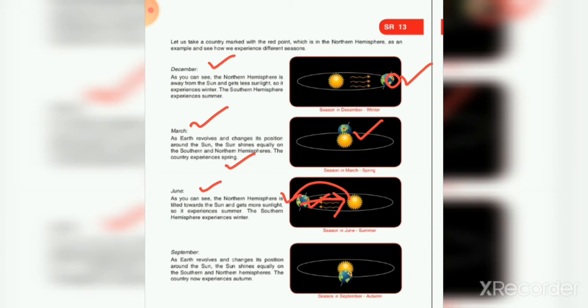In September, as Earth revolves and changes its position around the sun, the sun shines equally on the southern and northern hemisphere. The country now experiences autumn. When southern and northern hemispheres receive equal sunlight again, the season is autumn. In December the northern hemisphere experiences winter; in March with equal sunlight, spring; in June tilted towards the sun, summer; in September equal sunlight again, autumn.